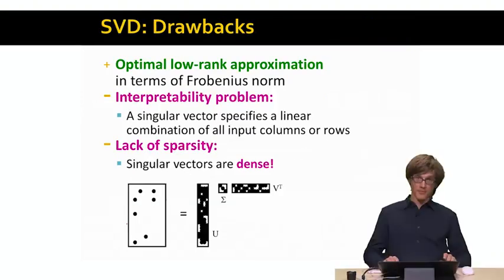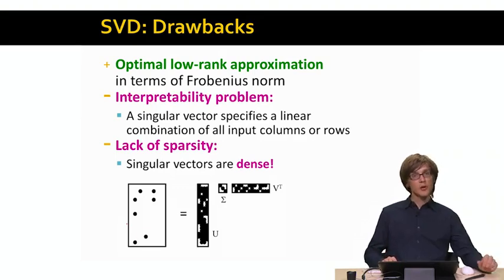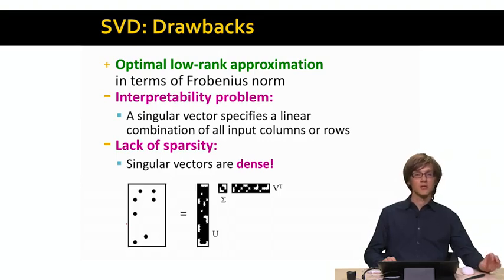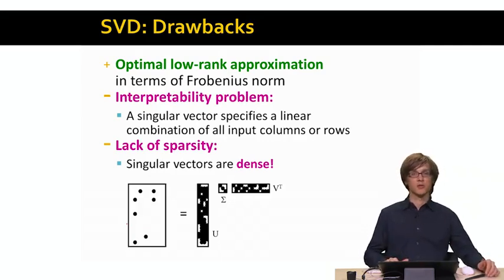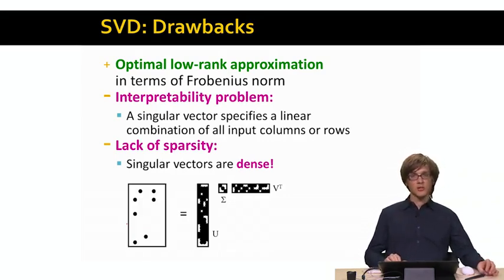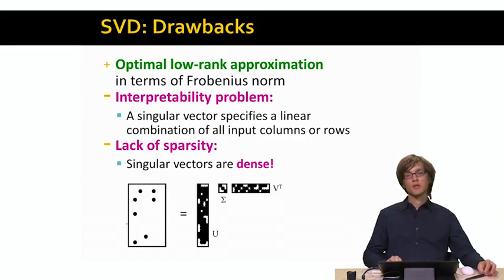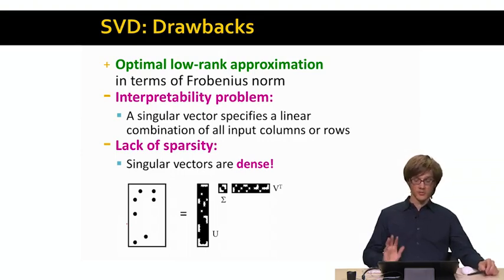To finish talking about singular value decomposition, here is an overview. What is good about SVD is that it gives us the optimal low-rank approximation in terms of the Frobenius norm. If we allow ourselves to represent our data using a small number of dimensions, SVD will identify the best possible projection into that small dimensional space, such that going back from the small dimensional space to the original high-dimensional space, the sum of squares of reconstruction errors will be as small as possible.